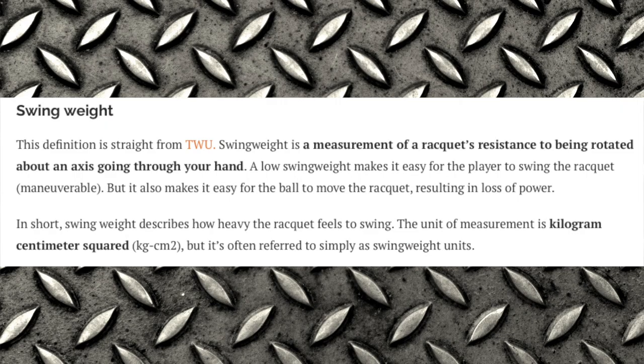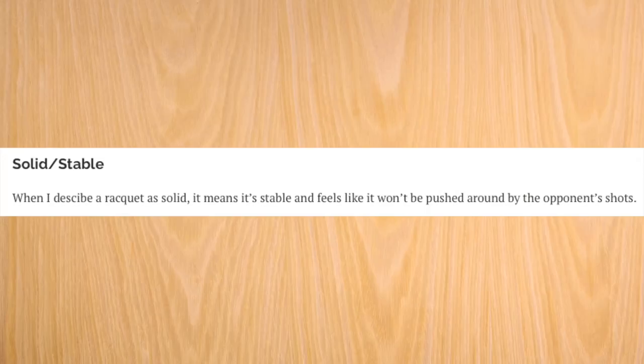Swing weight — a common question. In essence, it's how heavy the racket feels to swing, measured in kilogram centimeters squared. Most pro players use swing weights of 350–360 or higher, while most recreational rackets are around 310–325. Advanced player frames like the new Vcore Pro 97H or the RF97 have swing weights in the 340 range, which is pretty rare today.